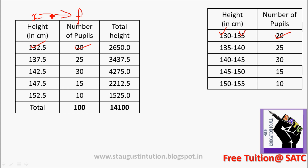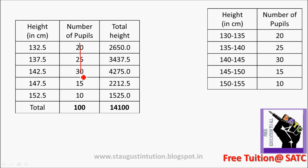Let's set up the fx column — that is the third column. That is 132.5 multiplied by 20, then 135.5 multiplied by 20, then 135.5 multiplied by 30. The first column is f and the second is fx. We will add them up. The total sum is 14,100.